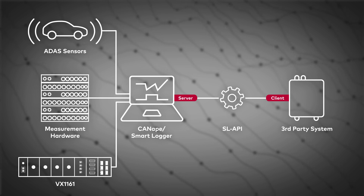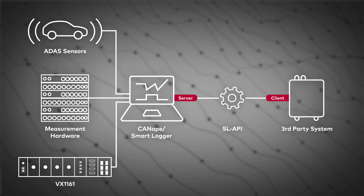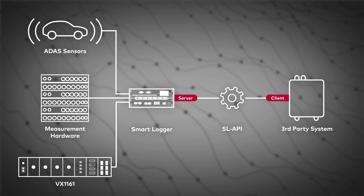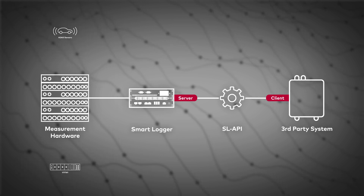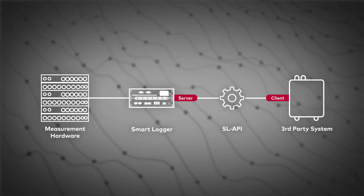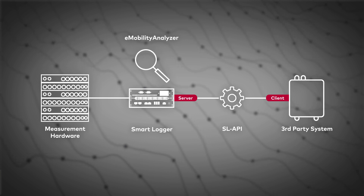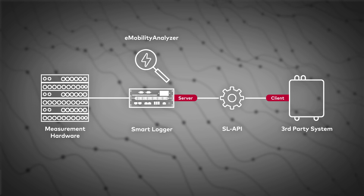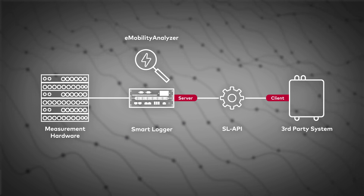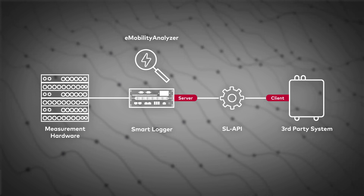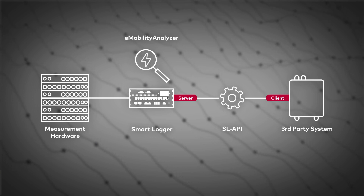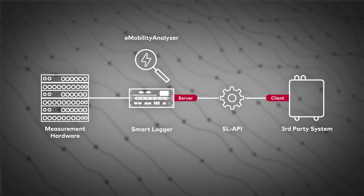Your third-party system gets access to the powerful Vector hardware and software environment. Let me give you an example. You have a smart logger running Canopy with different measurement hardware modules connected. The e-mobility analyzer integrated in Canopy can calculate power and efficiency from raw voltage and current data. With our SL API, you can use this capability of the Vector system and send the results to the third-party systems.